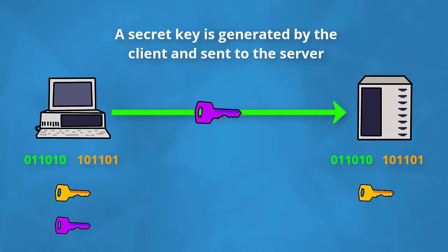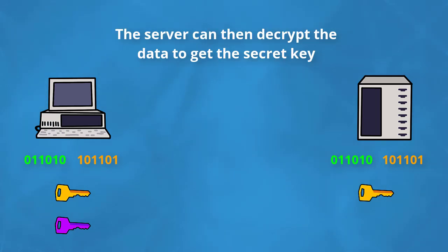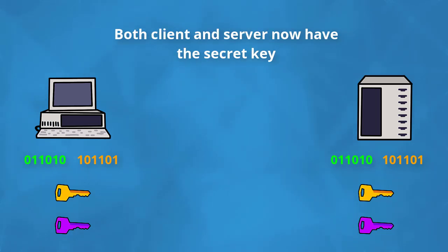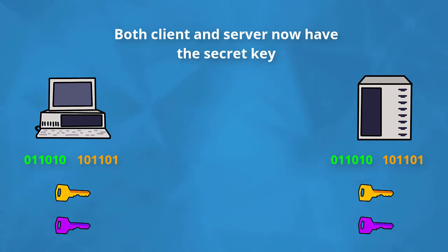Now since the client encrypted that data using the server's public key, the server has its own private key which nobody else knows about, that it can use in order to decrypt that message. At this point both the client and the server have the secret key as well as the random bytes that they sent each other.